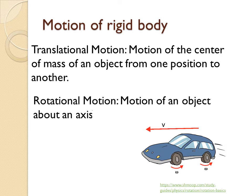Rotational motion is the motion of an object about an axis. There is a fixed axis, and if the body changes its position about that axis, it is called rotational motion. The motion of a swing and the motion of a door when we open it are examples of rotational motion.